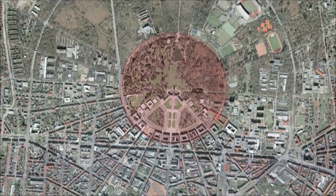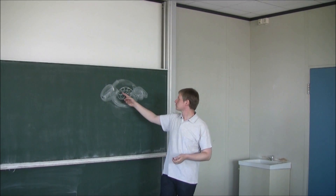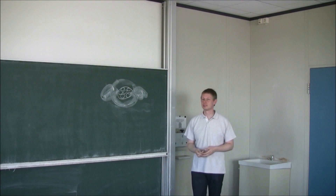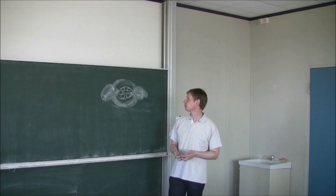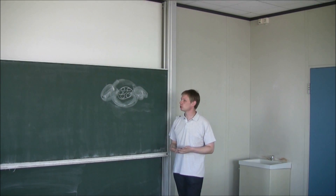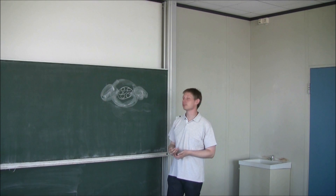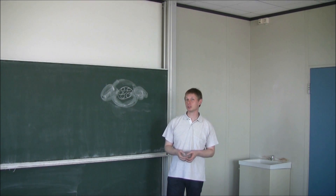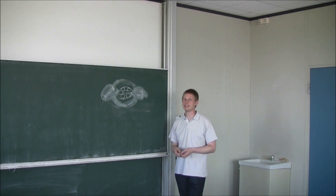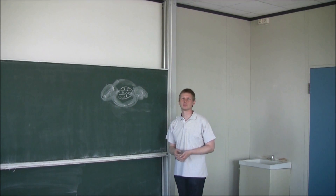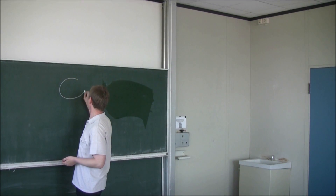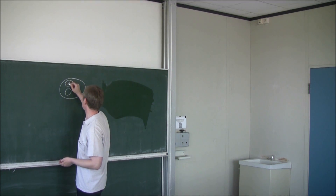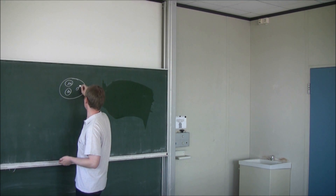Jedoch sind die Neutronen und Protonen noch keine Elementarteilchen. Der Atomkern besteht also aus Protonen und Neutronen. Schaut man sich diese aber genauer an, findet man, dass dies noch nicht die elementaren Bausteine sind, sondern jedes Proton und Neutron besteht aus Quarks. Und zwar das Proton aus zwei Up-Quarks und einem Down-Quark, und das Neutron aus zwei Down-Quarks und einem Up-Quark.